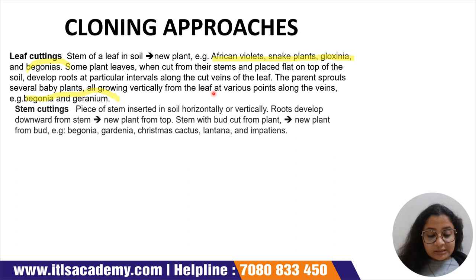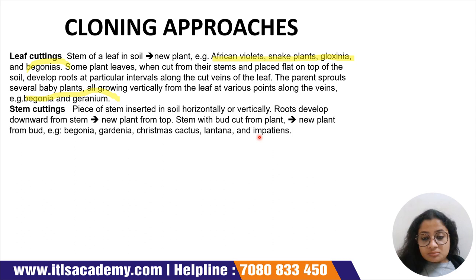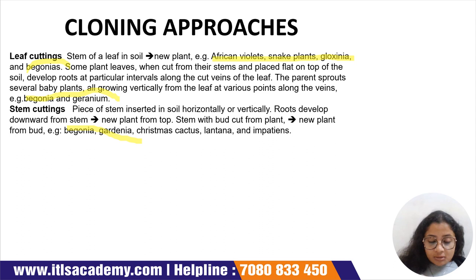Secondly, we can go for stem cuttings. In stem cuttings, we take a piece of stem and insert it in the soil either horizontally or vertically, and then the roots will develop downward from the stem and the new plant will develop from the top. We can also use a stem with a bud cut from the plant, which will give rise to a new plant from the bud. Examples include begonia, gardenia, Christmas cactus, lantana, and impatiens.